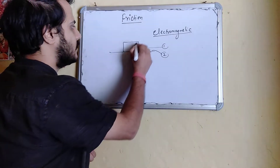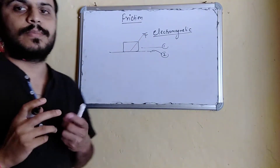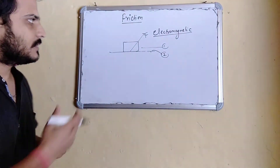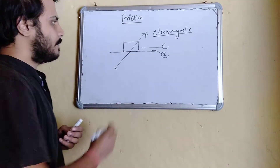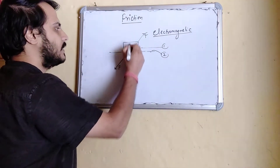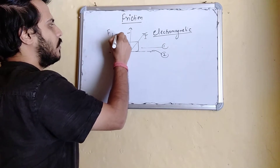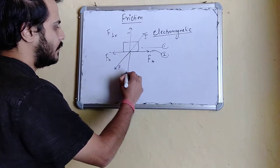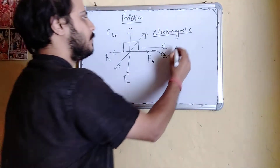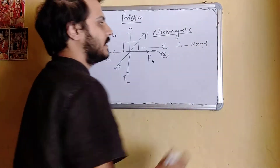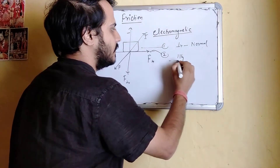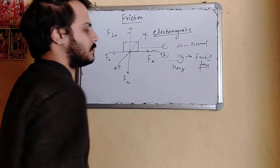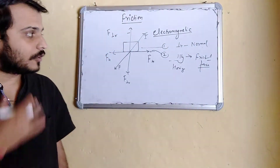One surface exerts a contact force — it is not a necessity that the force is always perpendicular to the surface. So let us suppose this is the contact force on the first body due to the second one. I resolve this force into two parts: one part is the perpendicular component of this force, which we call the normal force or normal reaction, and the other is the horizontal component, which is the frictional force.